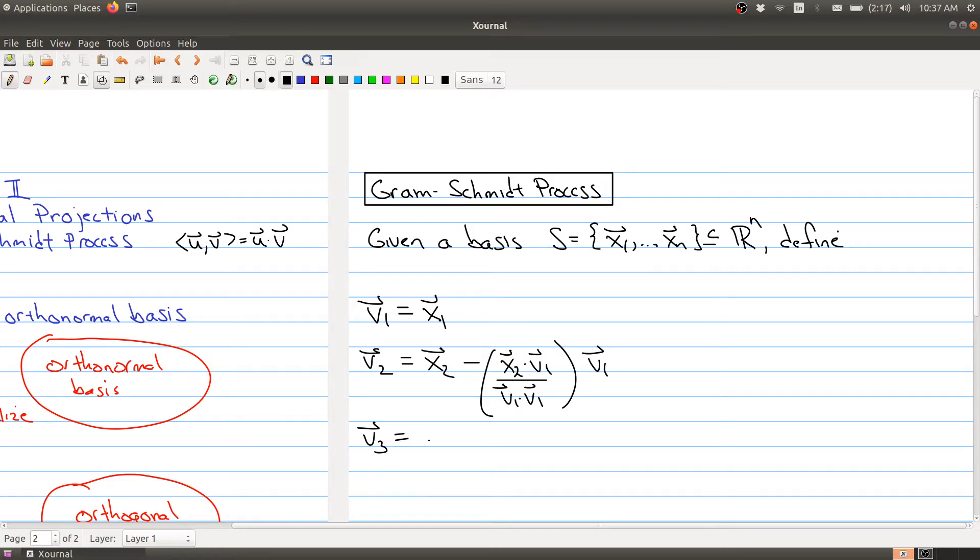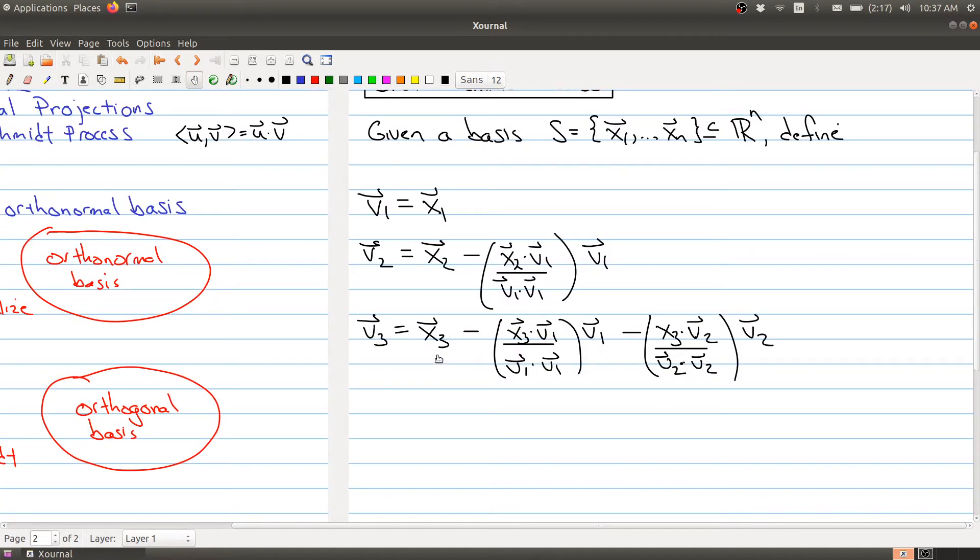Now I'm going to look at v3. And hopefully you'll see how the pattern is after a couple examples here. So you take x3 and now you're going to take x3 dotted with v1 divided by the dot product of v1 with itself, multiplied by v1, and then you're going to subtract x3 dotted with v2, because I've already found v2, divided by v2 dotted with itself, times the vector v2. And as you can hopefully see the pattern here, is you're taking the current vector of your basis and then you're forming some particular dot products with the vectors you've already have, and you're doing scalar multiples of those vectors. And you keep carrying through.